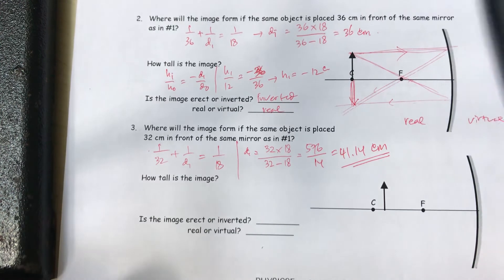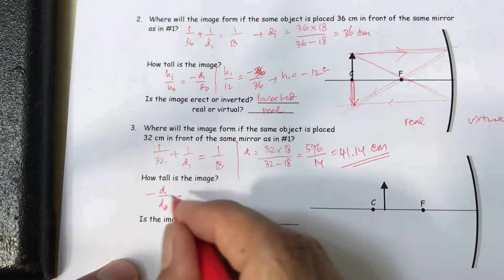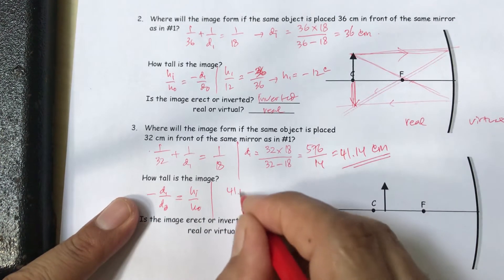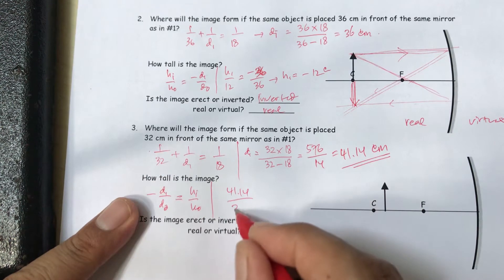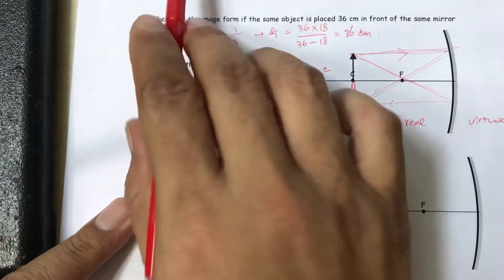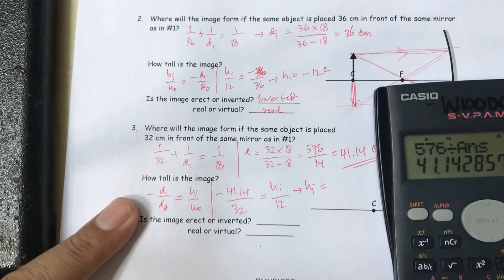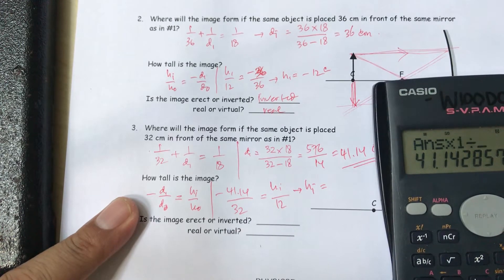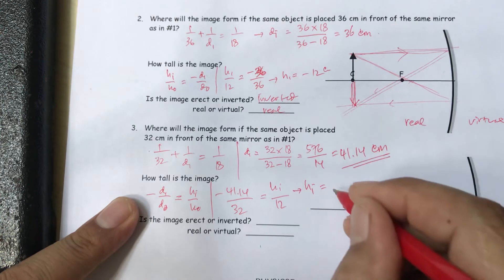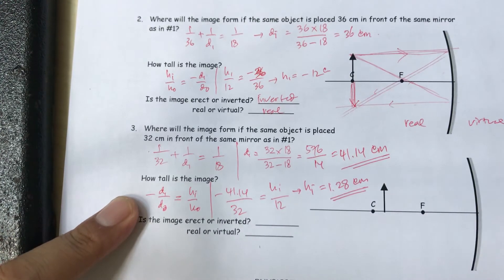For the height of the image, d-i divided by d-o equals h-i divided by h-o. Here d-i is 41.14, d-o is 32, and h-o is 12. So h-i equals 12 times 41.14 divided by 32, giving approximately 15.4 centimeters.